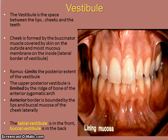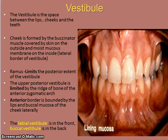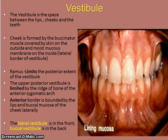The ramus limits the posterior extent of the vestibule — at the ramus, the buccal vestibule ends. The upper posterior vestibule is limited by the ridge of bone of the anterior zygomatic arch. The labial vestibule is the front portion of the vestibule by the lips, while the buccal vestibule is in the back towards the molars.